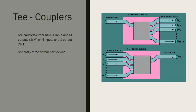T couplers either have one input and several outputs, or several inputs and one output. They are generally three-port or four-port devices. In a three-port T coupler, there will be one input and two output ports. In a four-port T coupler, there will be three output ports and one input port.